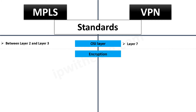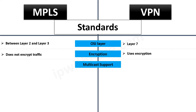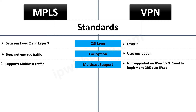Encryption is an important security posture to protect crucial customer information. By default, MPLS does not encrypt customer traffic, whereas VPN uses encryption to protect customer information over the unsecured internet. Some applications use multicast for communication — MPLS provides a favorable path for multicast traffic, while IPsec VPN does not support multicast traffic.